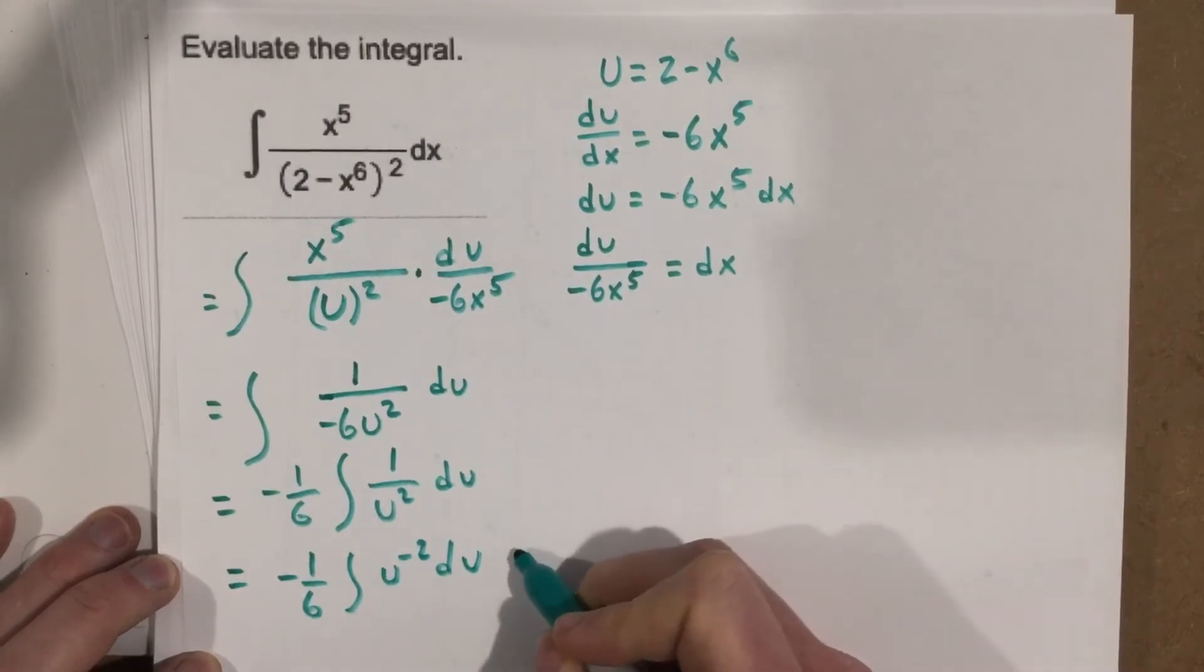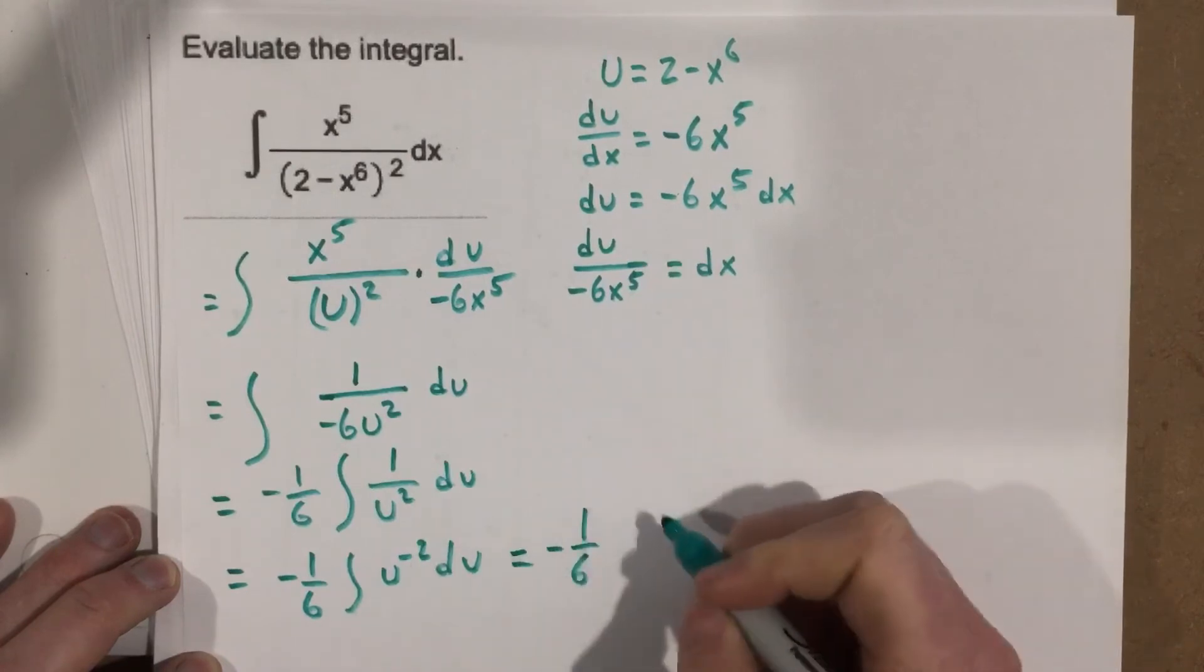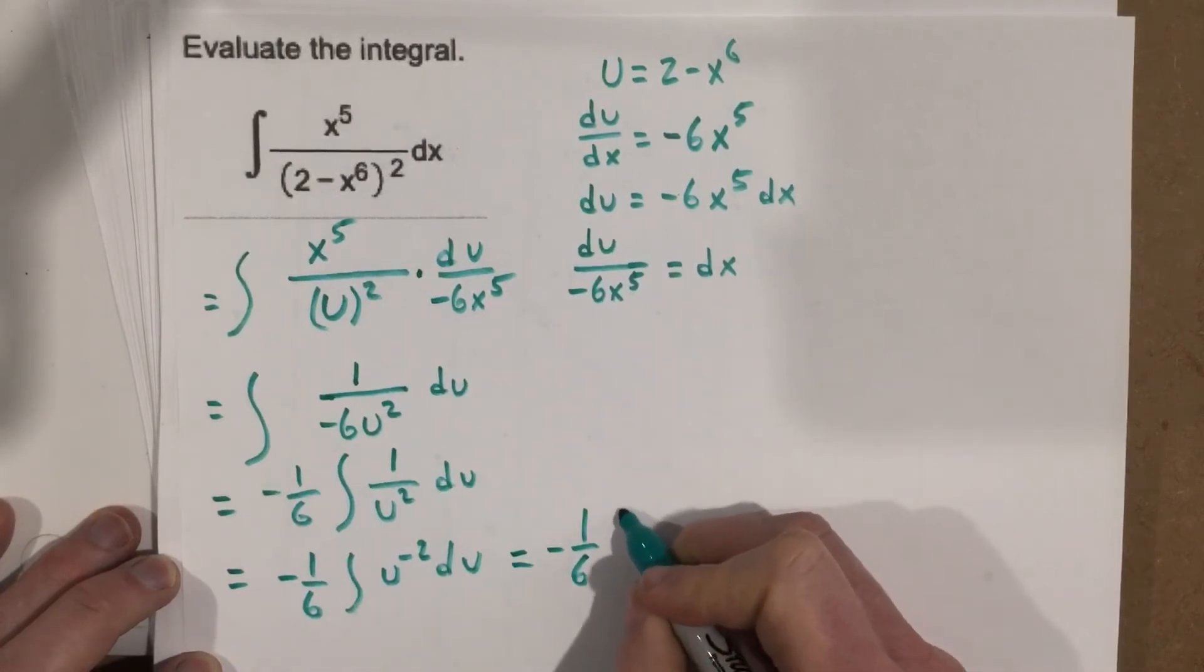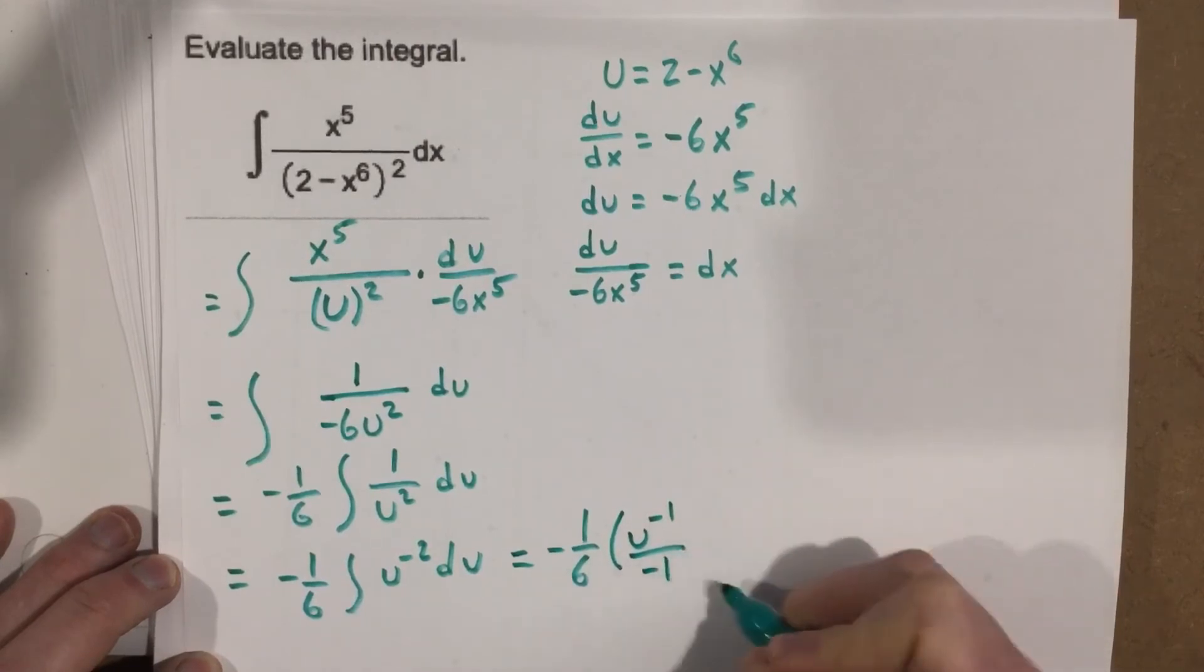So we get negative one-sixth times—add 1 to this—that would be u to the negative 1 over negative 1 plus c.